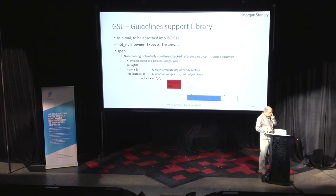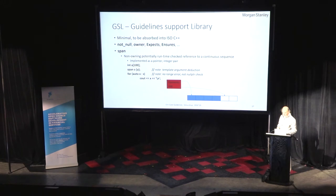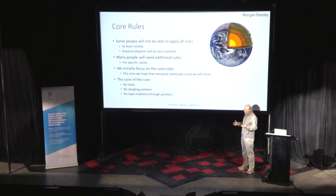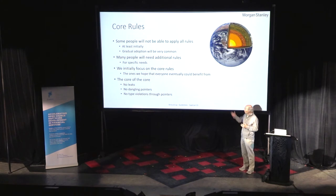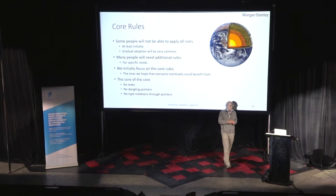We want to put ourselves out of the library business — that's an important thing. We don't want to be another burden of things you have to load up and learn. They're called core guidelines and core rules because not everybody can do it all, and everybody will have extensions. We hope there will be more work with more extensible rules for specific areas.